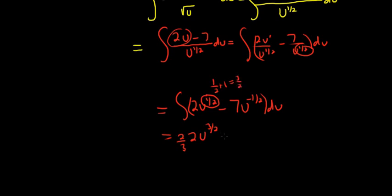Here we're adding 1, so 1 plus negative 1 half is 1 half. So we're dividing by 1 half. Dividing by 1 half is the same thing as multiplying by 2. Then we have our plus c.